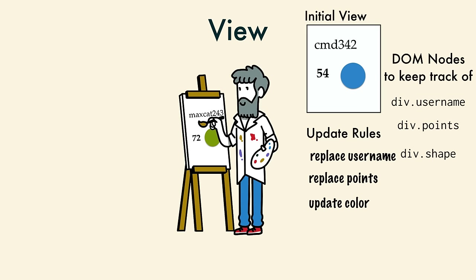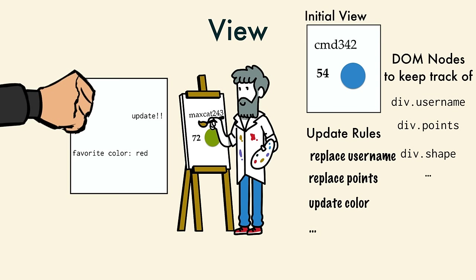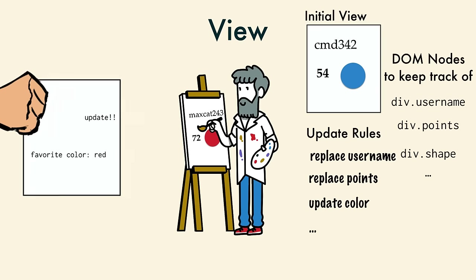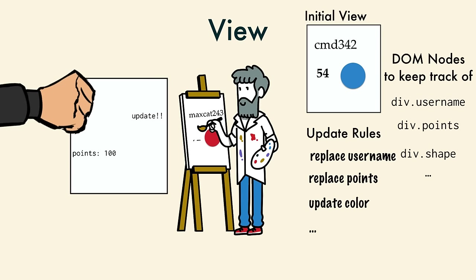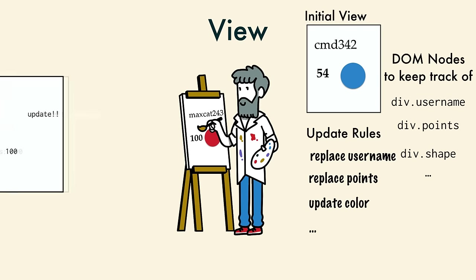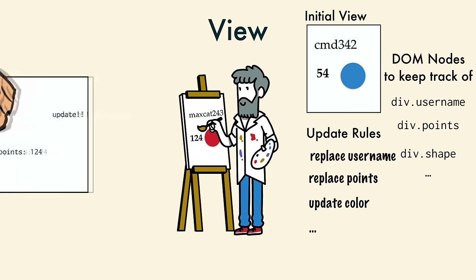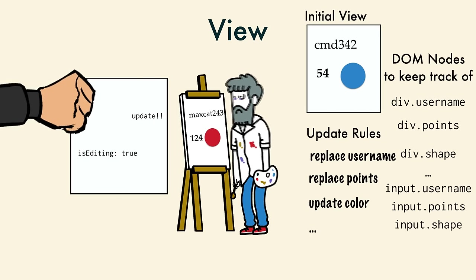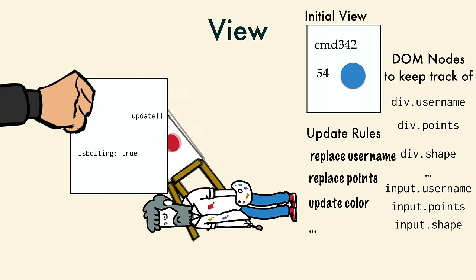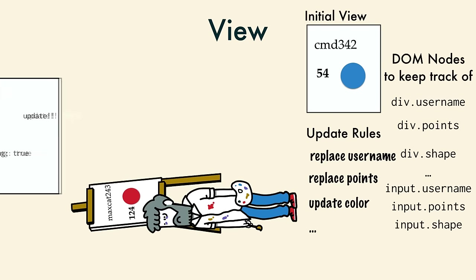The view thought that that might be the end of the update rules, but they just kept adding up. He had to keep track of so much, and sometimes the order of the update events mattered. It was all too much. After a while, he gave up. He could not continue.